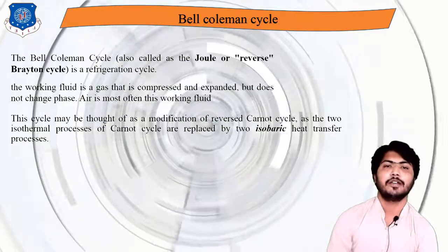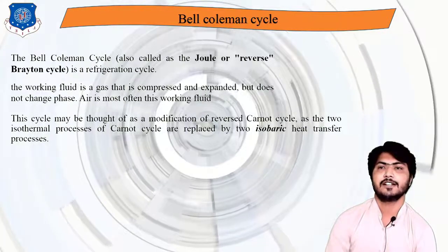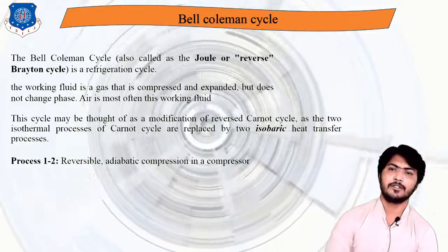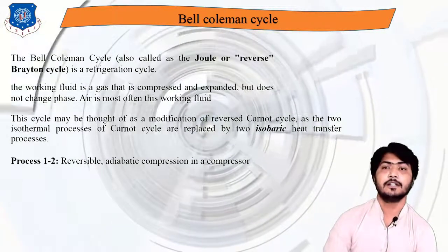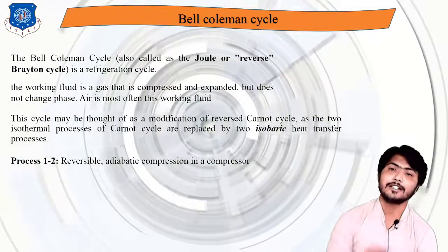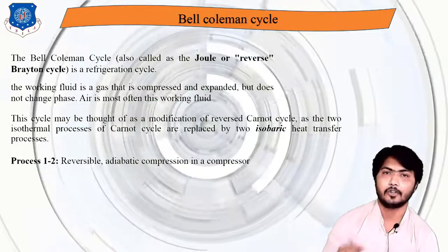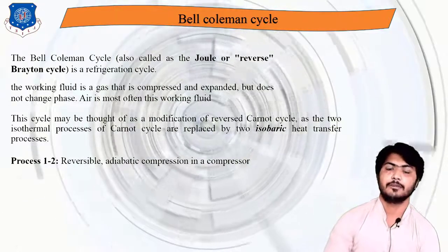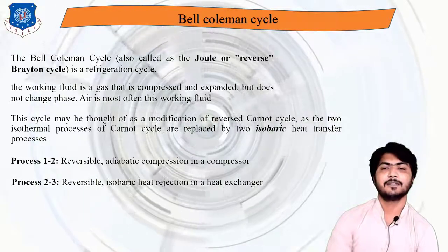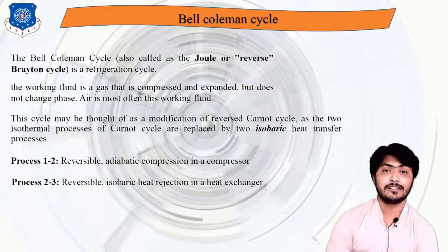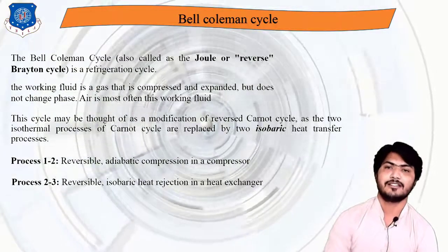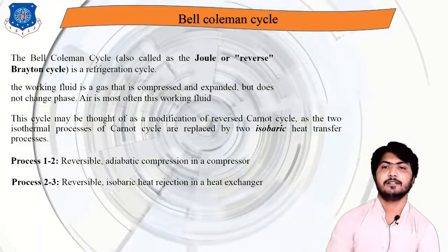Process 1 to 2 is reversible adiabatic (isentropic) compression in the compressor — similar to the reverse Carnot. Process 2 to 3 is reversible isobaric heat rejection, where heat is rejected to the surroundings or atmosphere in a heat exchanger at constant pressure.